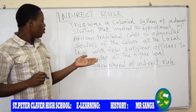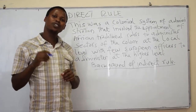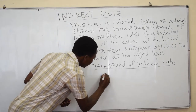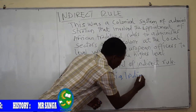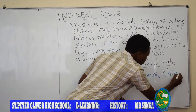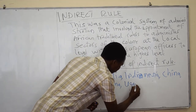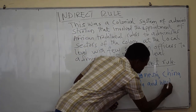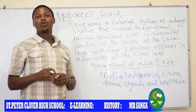After these definitions, we are going to see a background of Indirect Rule. Indirect Rule was introduced by the British colonel in the world, especially in different countries like India, Indonesia, China, Ghana, Uganda, and West Africa. But today I will discuss Indirect Rule in Africa.